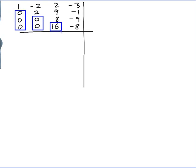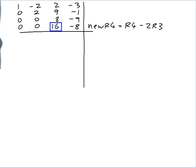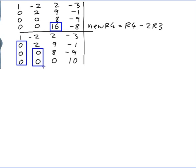All I need now is a zero in the remaining position, and it will be an upper triangular matrix. To get a zero there I can do row four minus two times row three. So my new row four is row four minus two of row three: 0 - 2(0) = 0, 0 - 2(0) = 0, 16 - 2(8) = 0, and -8 - 2(-9) = -8 + 18 = 10. So now I have a matrix in upper triangular form, with zeros below the main diagonal.